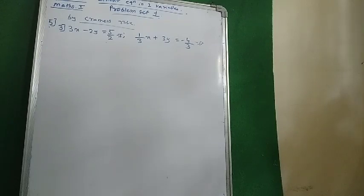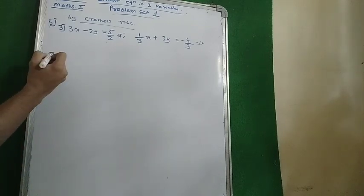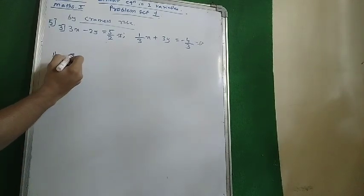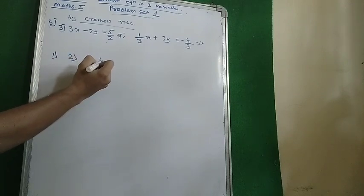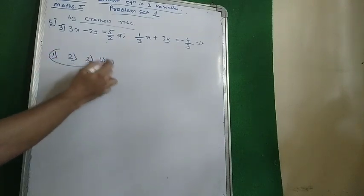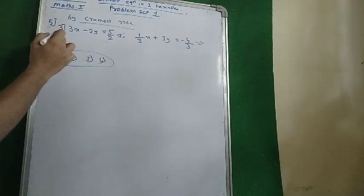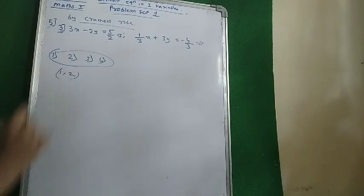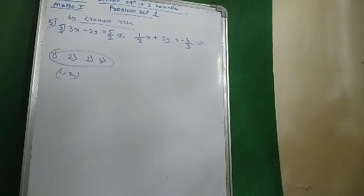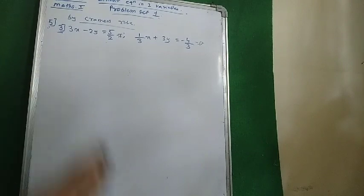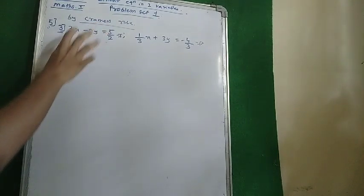We will start with the word problems of practice set 1.5, problem set 1. The first, second, third, and fourth questions are totally for homework. In the fifth question, we are directly solving the third one — the first and second are for homework. All sums I am not solving are for homework. Please do send me all the sums which are for homework. We need to solve this question by Cramer's rule.